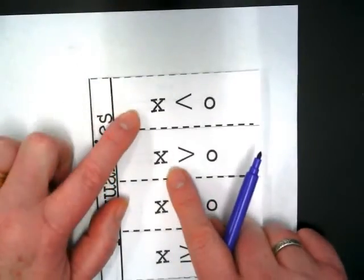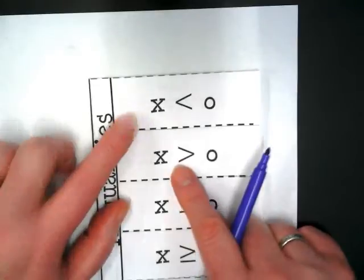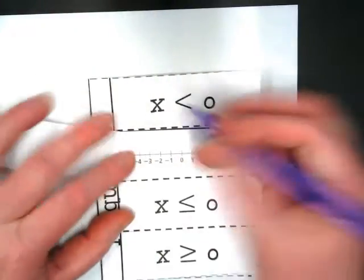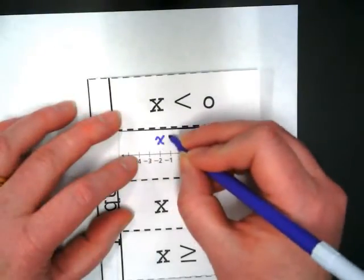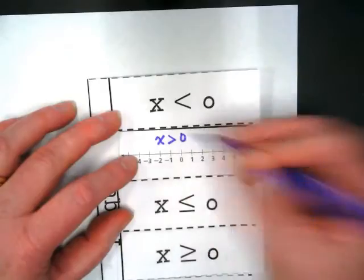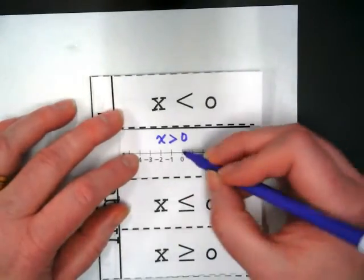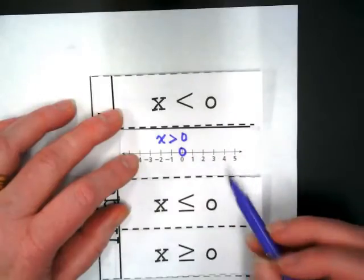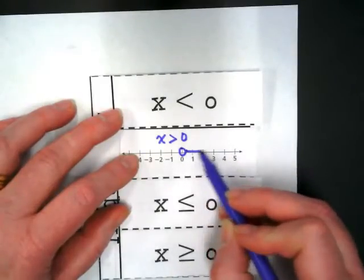The next one is x is what? Greater than zero. So let's open this up and rewrite it. x is greater than zero. Again, we're going to circle the zero and show our arrow to the right.